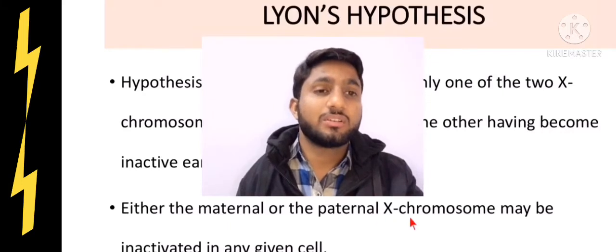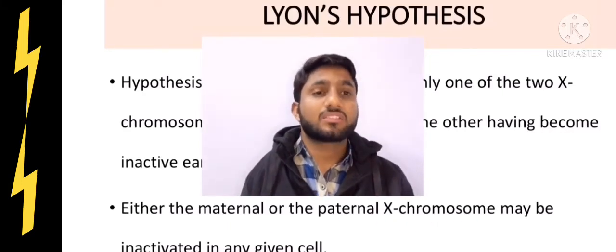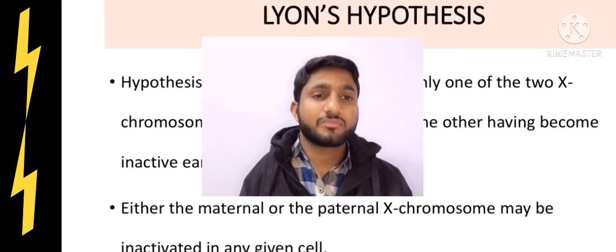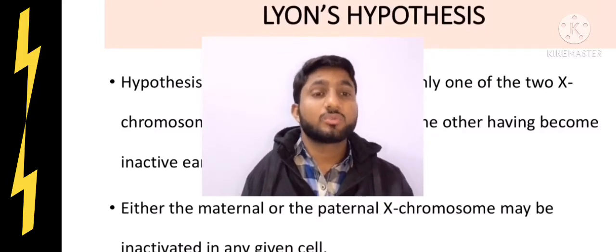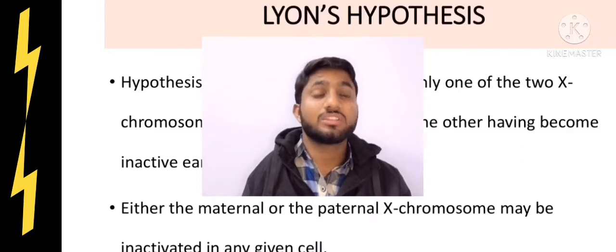Either the maternal or paternal X chromosome may be inactivated in any given cell. Whether it be from mother or father, they can be inactivated at any time. How will this activation happen? This would be random.